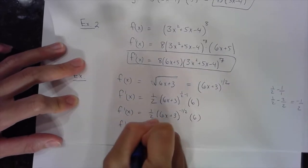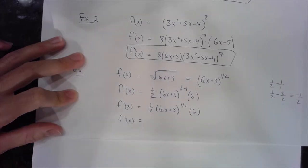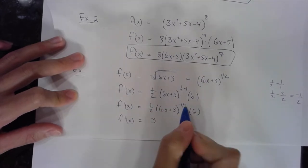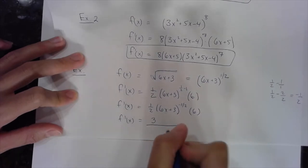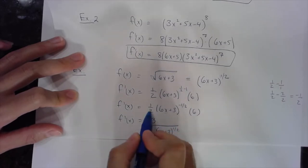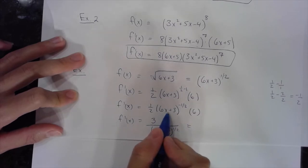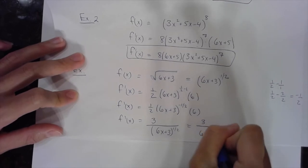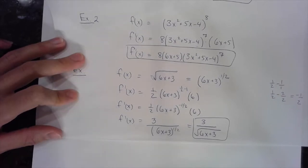When I simplify, I can multiply the one-half times the 6 because they're both outside the exponent — one-half times 6 is 3. The negative exponent applies to the (6x plus 3), so it goes to the bottom as (6x plus 3) to the positive one-half. The 3 stays on top. Which means I can also represent this as 3 over the square root of (6x plus 3) — back in radical form.